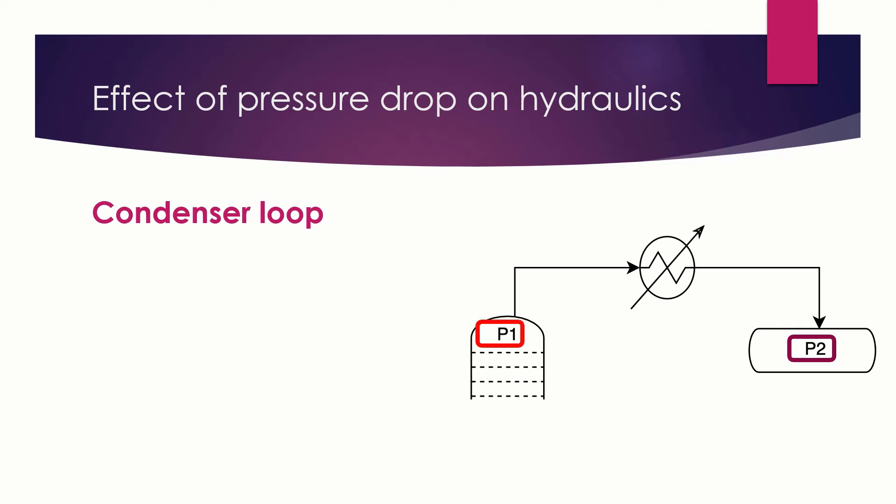In order that the vapor flows from the tower to the vessel at the flow we want, then the difference between P1 and P2 should be greater than the sum of the pressure drop in this pipe, the pressure drop in the condenser, and the pressure drop in the last pipe.